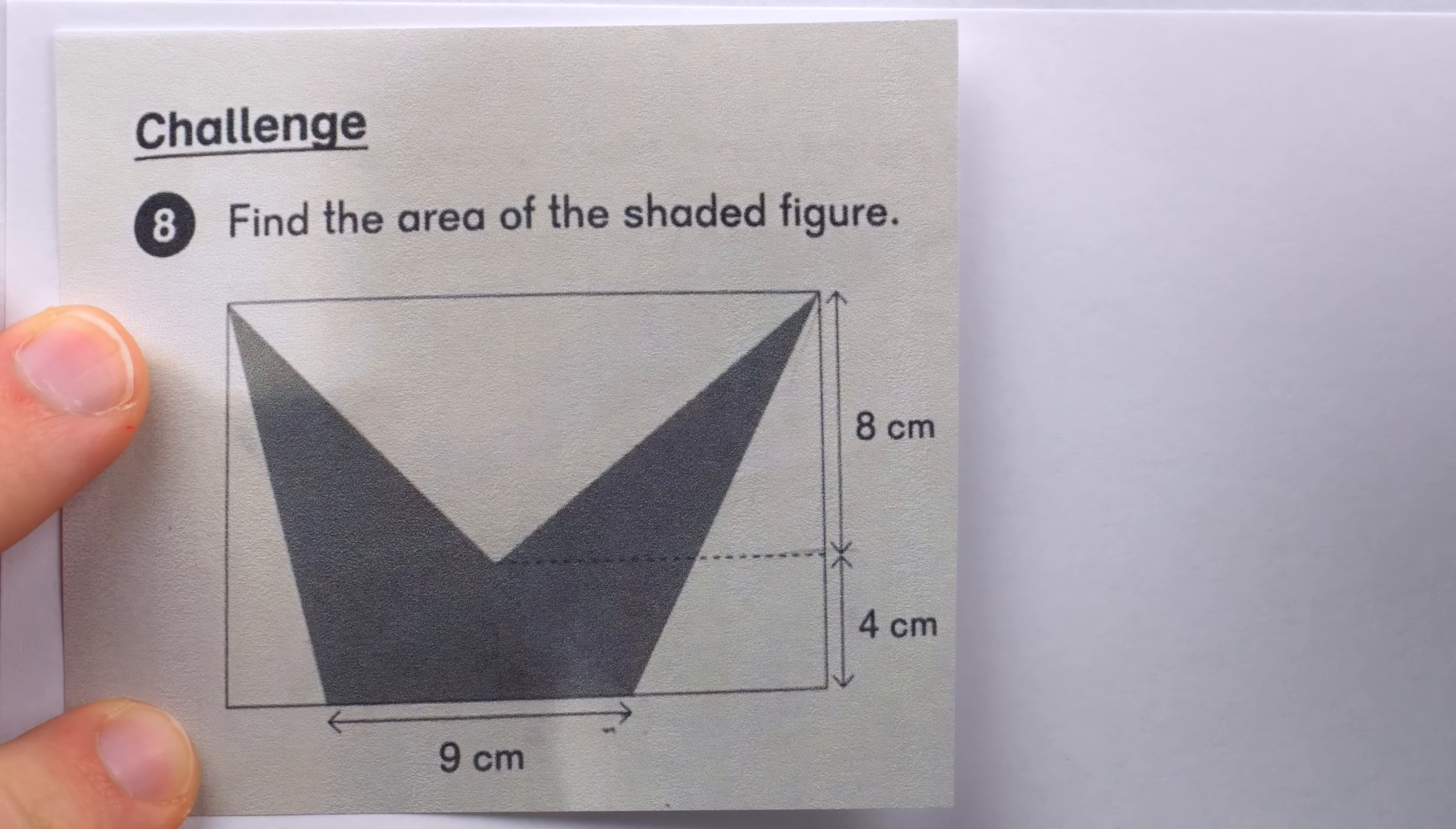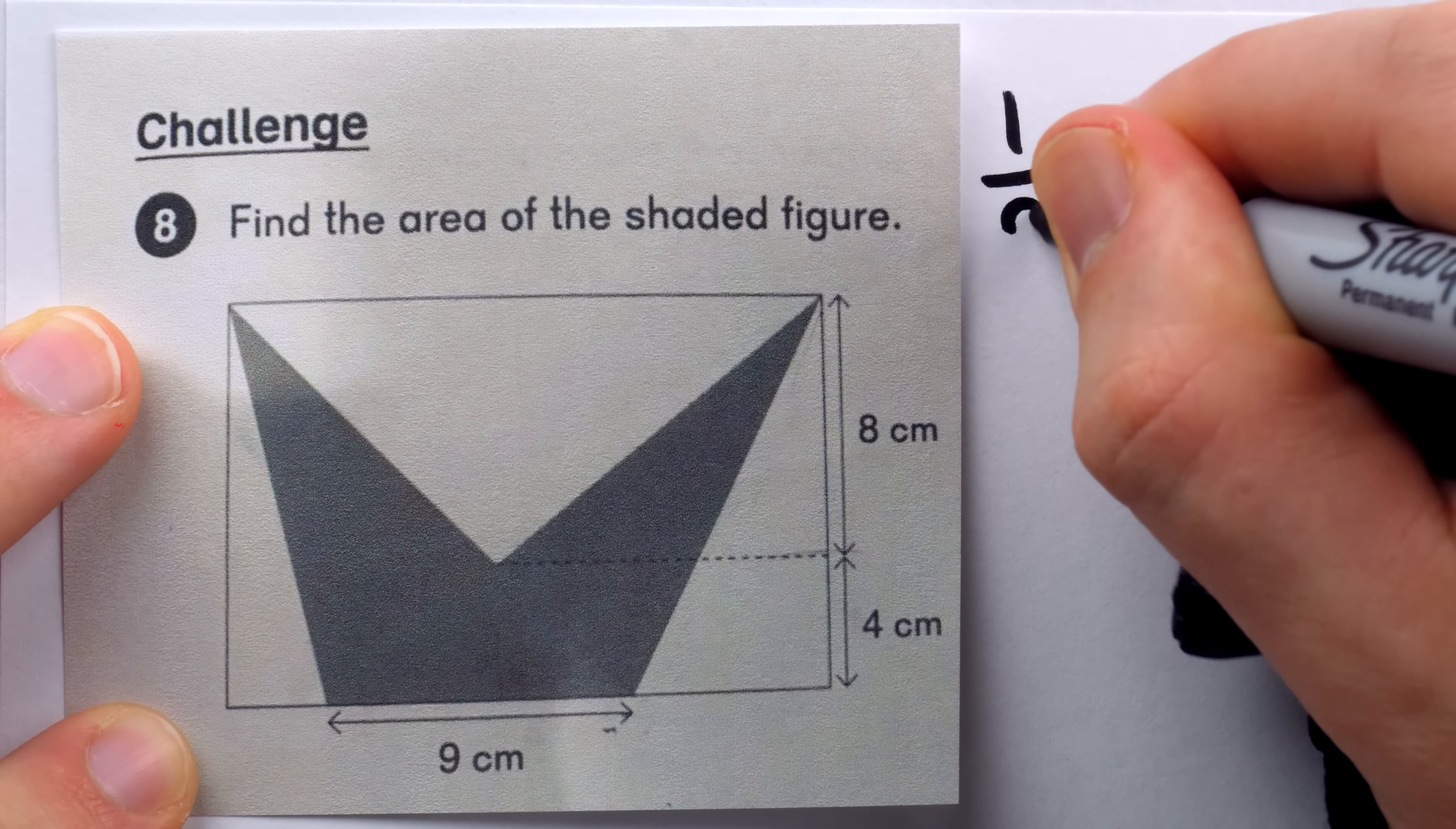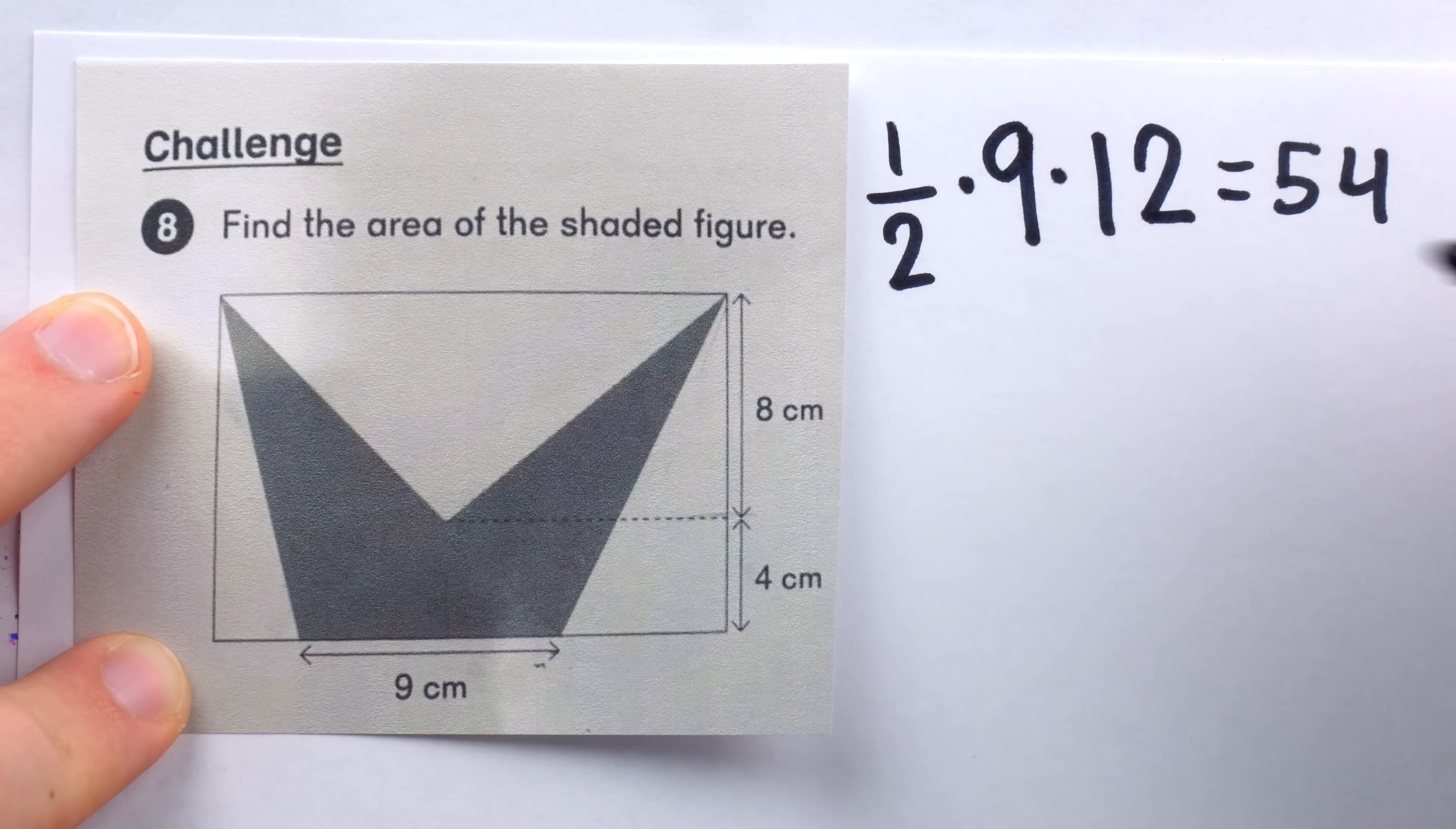The area of a triangle is one-half base times height. So the area of this triangle on the left is one-half times the base, which is nine, times the height, which is eight centimeters plus four centimeters, for a total of 12 centimeters. So the area of the triangle on the left is one-half multiplied by nine multiplied by 12. One-half times 12 is six, six times nine is 54. Then the triangle on the right, again, one-half base times height. The height is also 12, and the base is also nine. So again, it would just be 54.